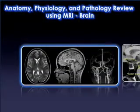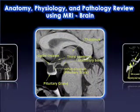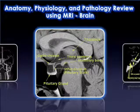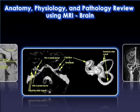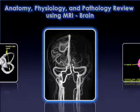The tutorial titled Anatomy, Physiology, and Pathology Review using MRI, Brain is designed to give the healthcare professional an overview of the anatomy and physiology of the brain, as well as the most common pathological conditions affecting the brain. The module will review the major structures on an MR image and discuss standard MR protocols for the brain. The course will conclude with a review of the main vessels of the head and neck, labeled MR Angiography Images, and a review of common cerebrovascular anomalies.